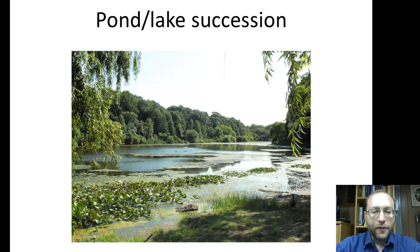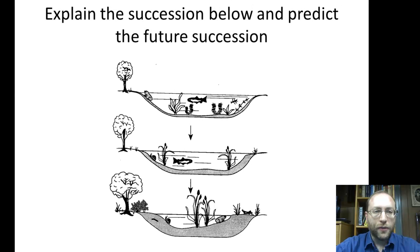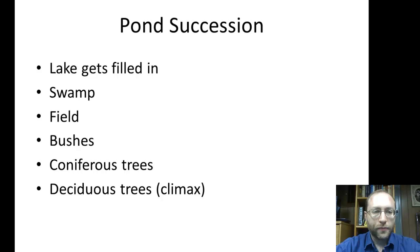The next type of succession is pond and lake succession. This pond, believe it or not, is actually in Queens — it's Alley Pond Park, about a block from the intersection of Northern Boulevard and the Cross Island Parkway. What basically happens is that the pond slowly fills in and gets smaller and smaller, and it will turn into a swamp. Eventually it'll go into a grassland and go through the whole sequence: we're eventually going to end up with forest. So you've got lake gets filled in, goes to a swamp, goes to a field, turns into bushes, then coniferous forest, and the climax community of deciduous trees.